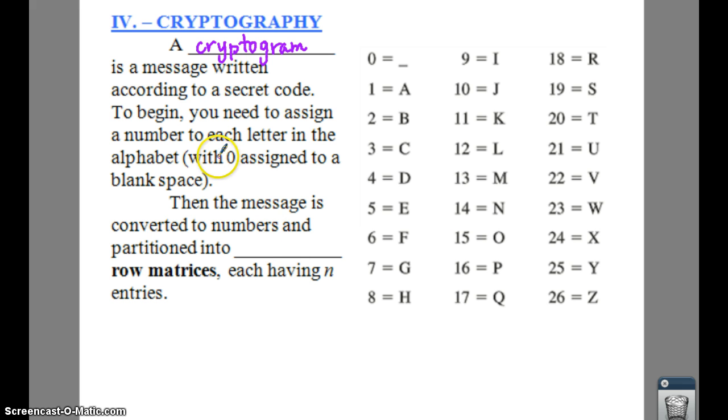What you can do is, if you assign a number to each letter, then your message can be converted into numbers, partitioned into what we call an uncoded row of matrices.